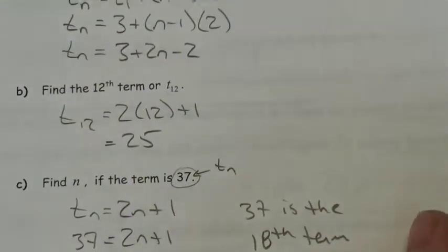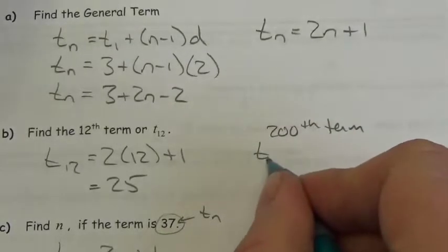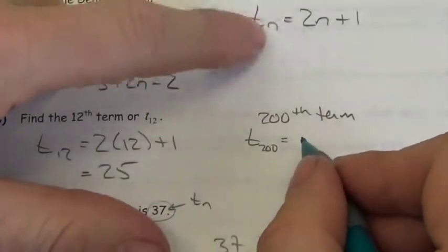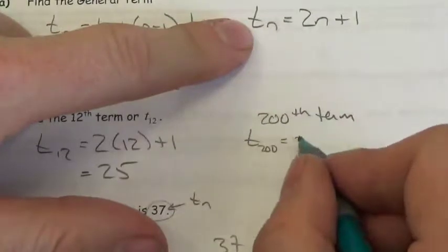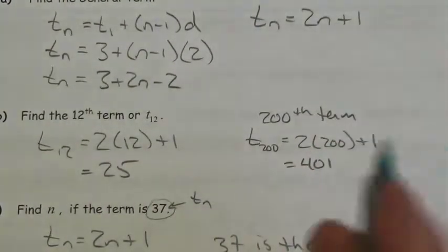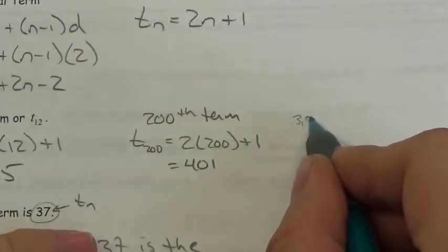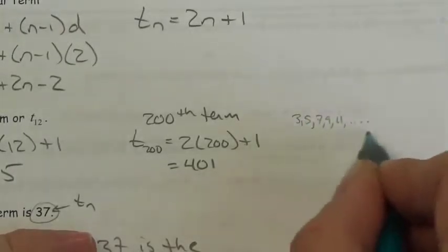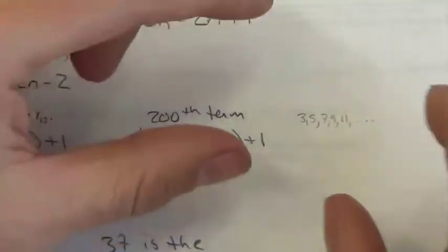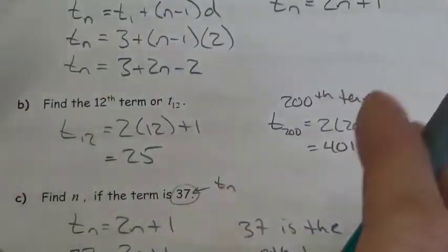Now that we have the general term, if I asked for the 200th term, T sub 200, I simply use the formula: 2 times 200 plus 1 equals 401. Please use the formula. Don't be the person who goes, 'I don't like formulas,' and starts listing 3, 5, 7, 9, 11... all 200 terms. There's almost always someone on an exam who does that — please don't. Use the formula. This question becomes gigantic if you go through every term of the sequence.